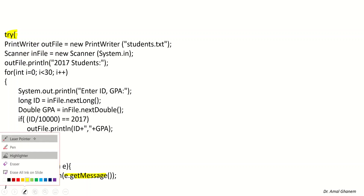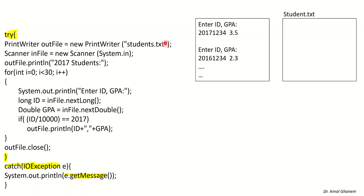Now let's go step by step. We need to say: PrintWriter outFile = new PrintWriter("student.txt"). This opens the file for writing, so any output will go to this file. We will read from the keyboard, so we need a Scanner — we'll call it inFile, a new Scanner(System.in). The first message to output in the file is '2017 students:', so we say outFile.println("2017 students").